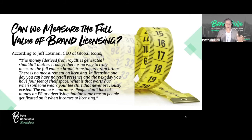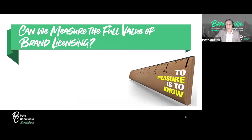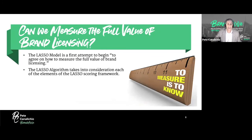People don't fixate on the cost of PR or advertising, but for some reason they get fixated on it when it comes to licensing. As an example, Walter has an Atlanta, Georgia t-shirt — he bought it before he met me, for whatever reason it looked compelling and was high quality. Now Atlanta has a presence in the UK and potentially throughout Europe through their licensing program. The LASSO model is the first attempt to agree on how to measure the full value of brand licensing.